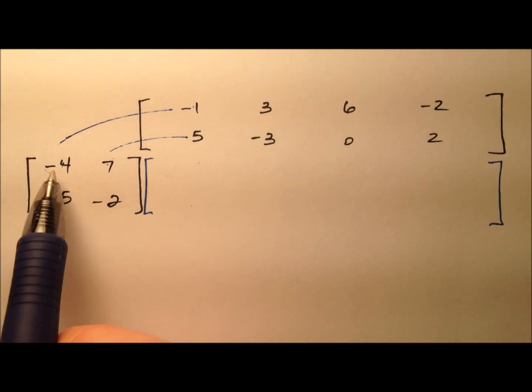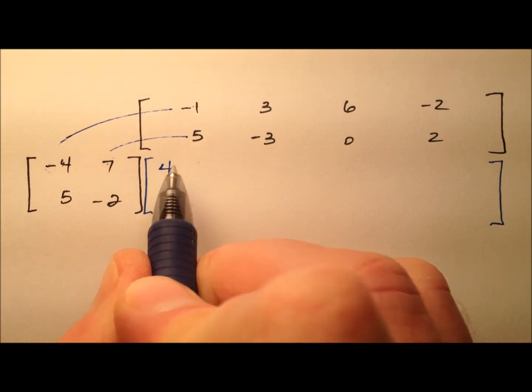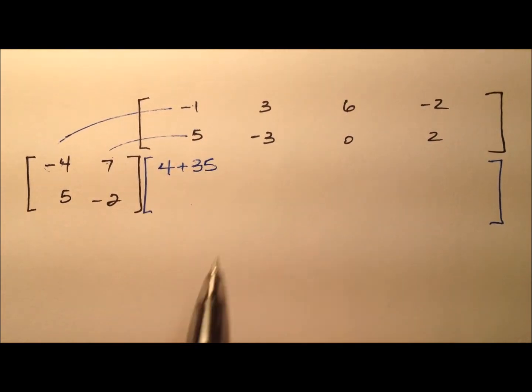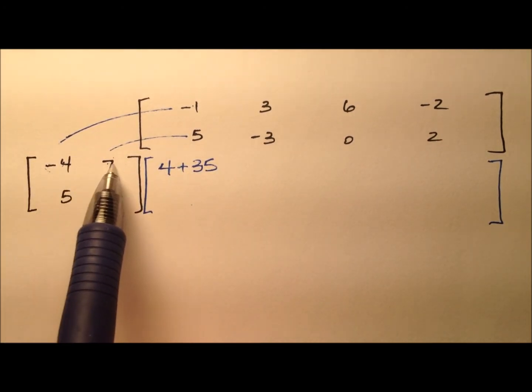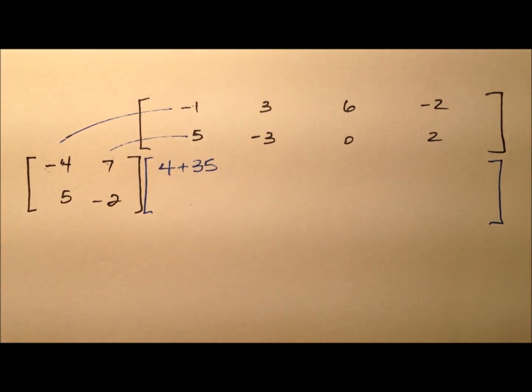So let's go ahead and step through that. So negative 4 times negative 1 will be positive 4, and then 7 times 5 is 35, and we're going to add those together. So this entry in the first row and first column used the first row here and the first column here, and they lined up very nicely.